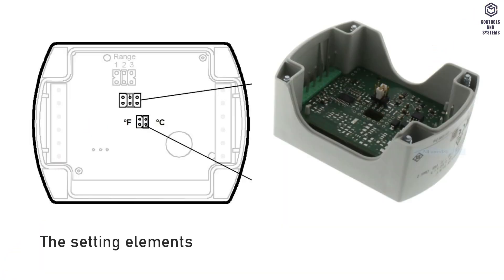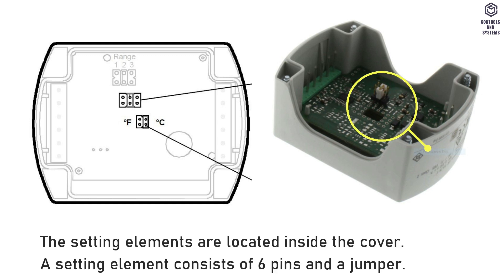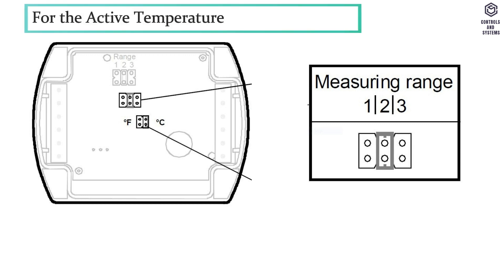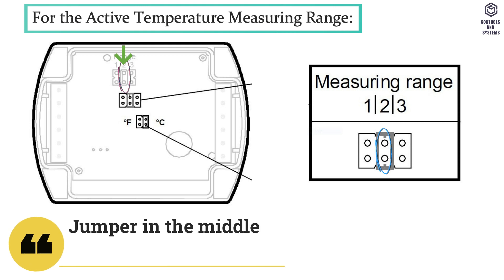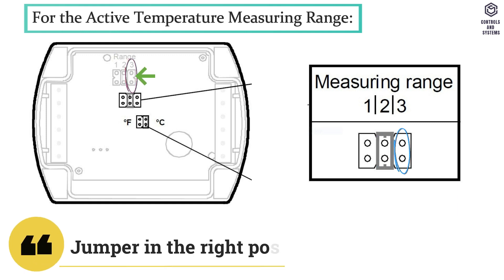Setting elements. The setting elements are located inside the cover. A setting element consists of 6 pins and a jumper. For the active temperature measuring range, jumper in the left position is R1 measuring range plus 35 to minus 35 degrees Celsius. Jumper in the middle position is R2 measuring range 0 to 50 degrees Celsius. Jumper in the right position is R3 measuring range minus 40 to plus 70 degrees Celsius.